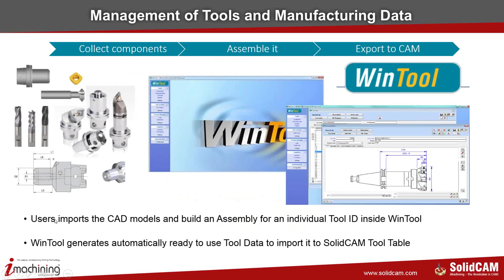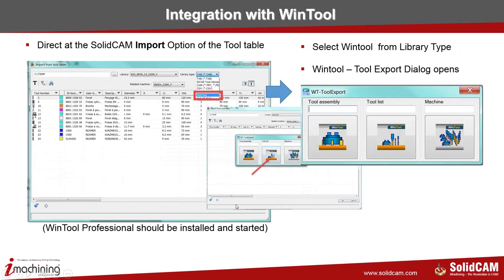The workflow we saw from Machining Cloud: collect the data in the system, mount the tool, and it's ready to use. One difference in the Wintool interface is that when we click to select the library type, we open a user interface from Wintool — which allows us to do the search, not via the filtering dialog. We do the tool filtering through classes.